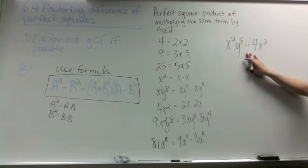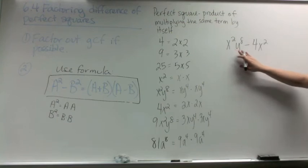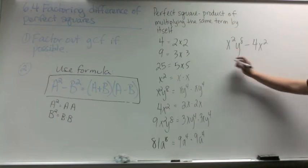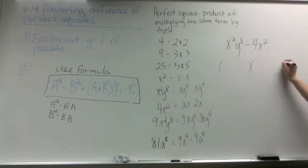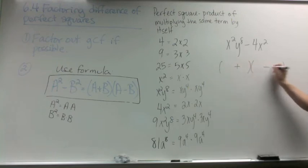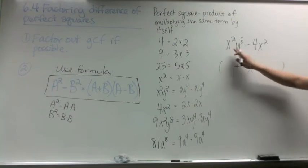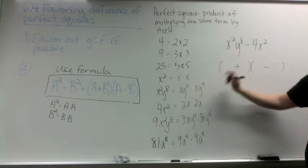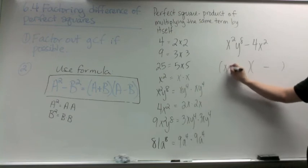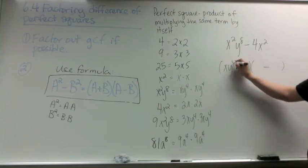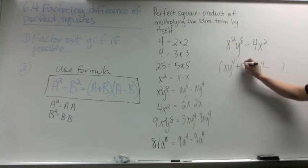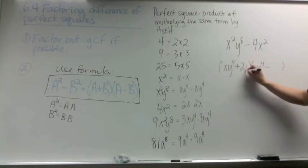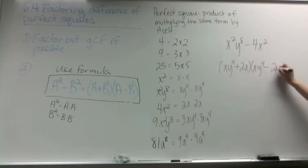In our next example, we have a difference of perfect squares, so we're going to set up our parentheses, put the signs in, and write the reason why this is a perfect square: x y to the 4th times x y to the 4th, and then 2x and 2x.